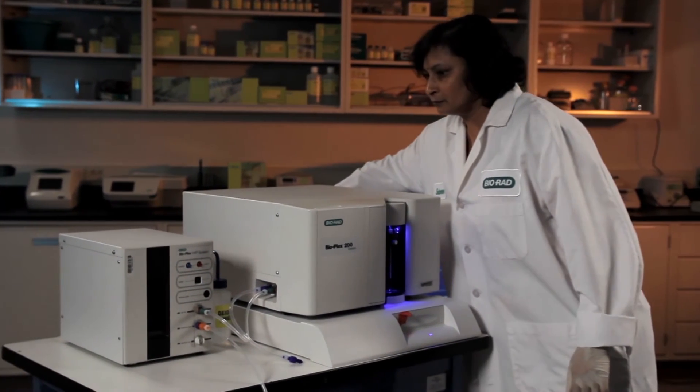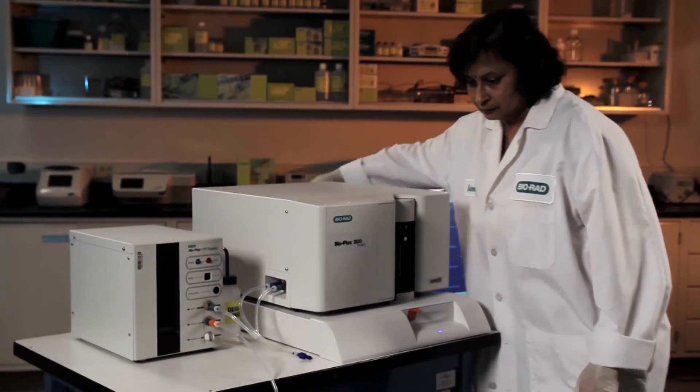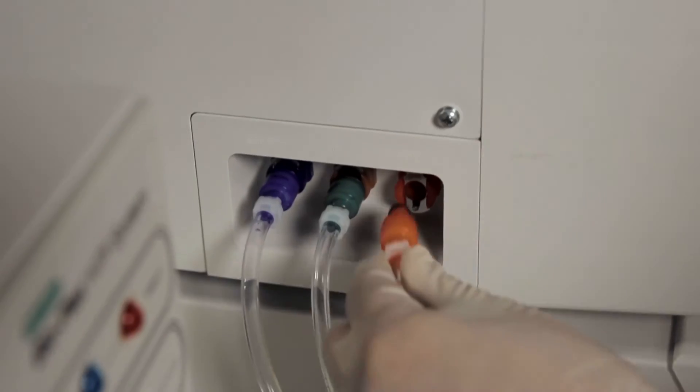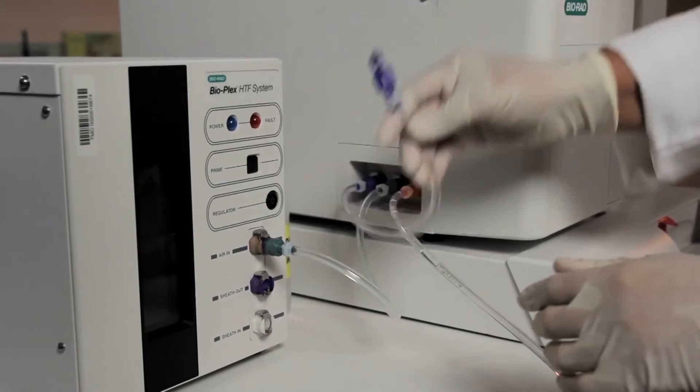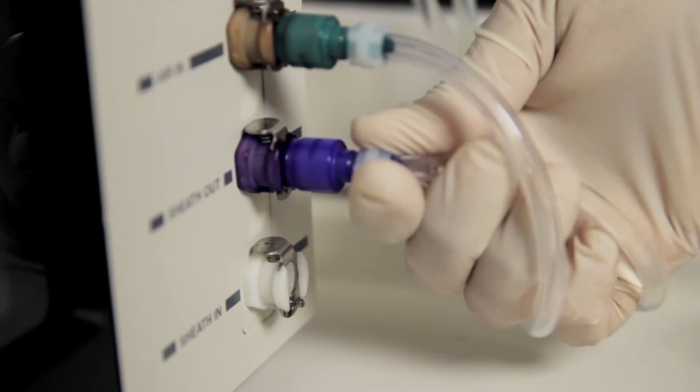As soon as the HTF is empty, switch off the reader and reconnect the tubes back to their normal color-coded positions. Blue and white to the HTF and the orange connector back to the array reader.